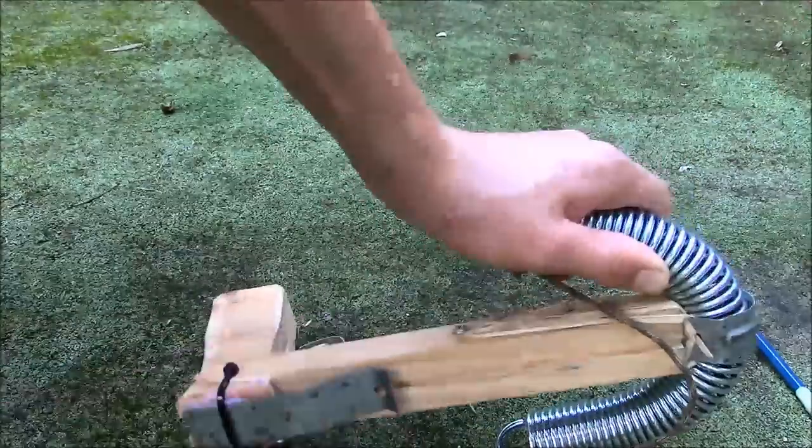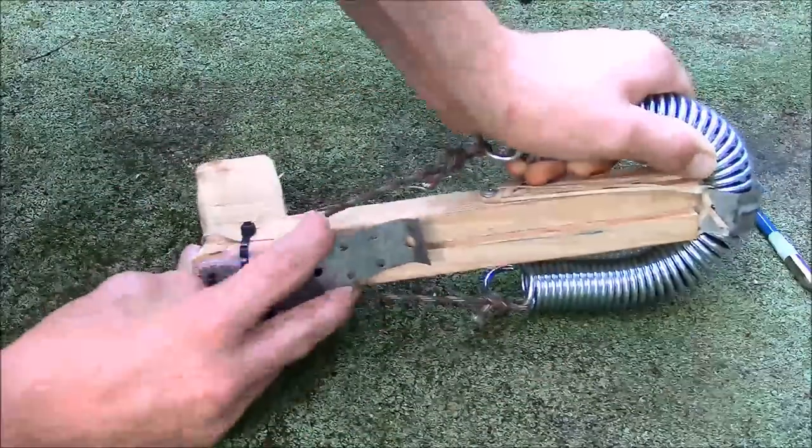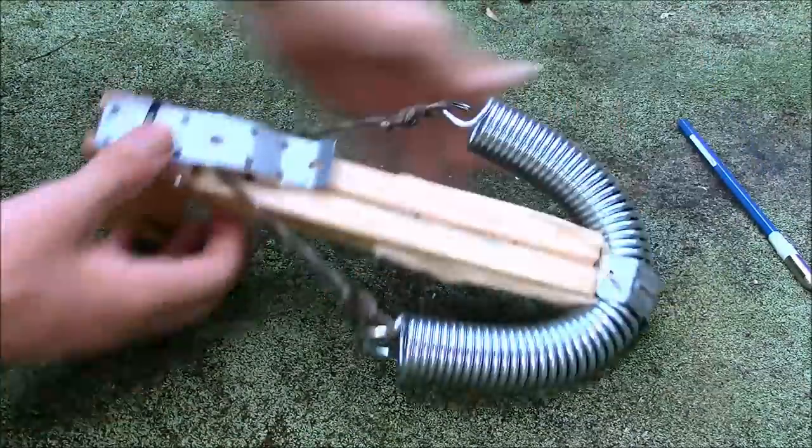To load the crossbow simply bend the spring over, pull the string into the trigger mechanism until it engages and it's ready to go.